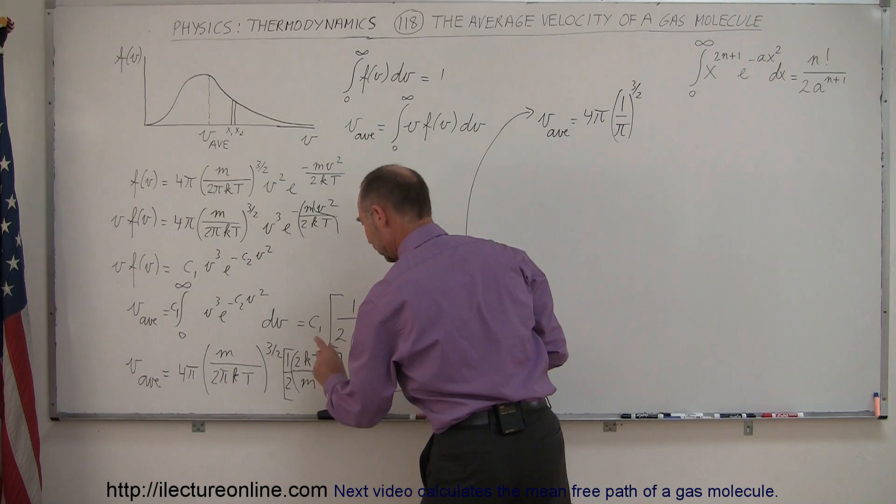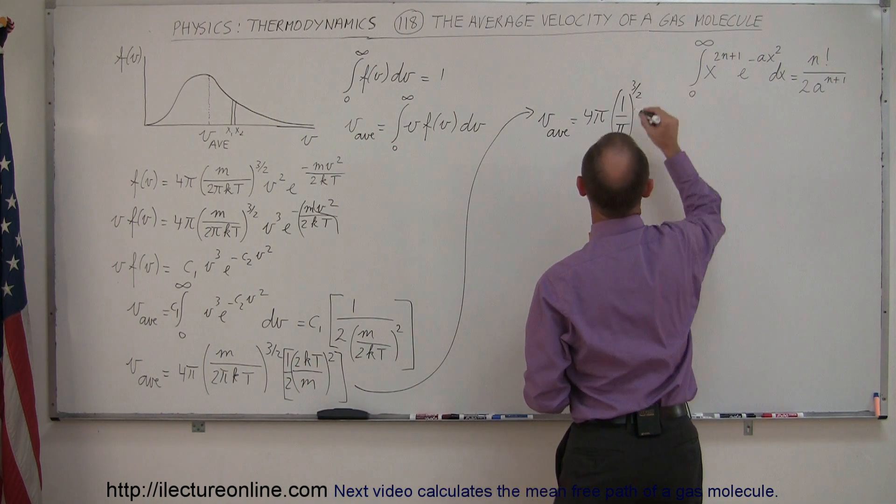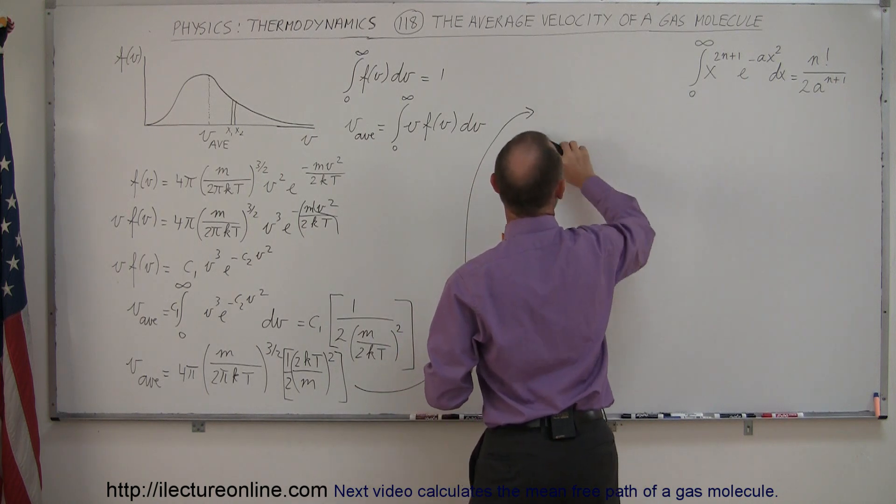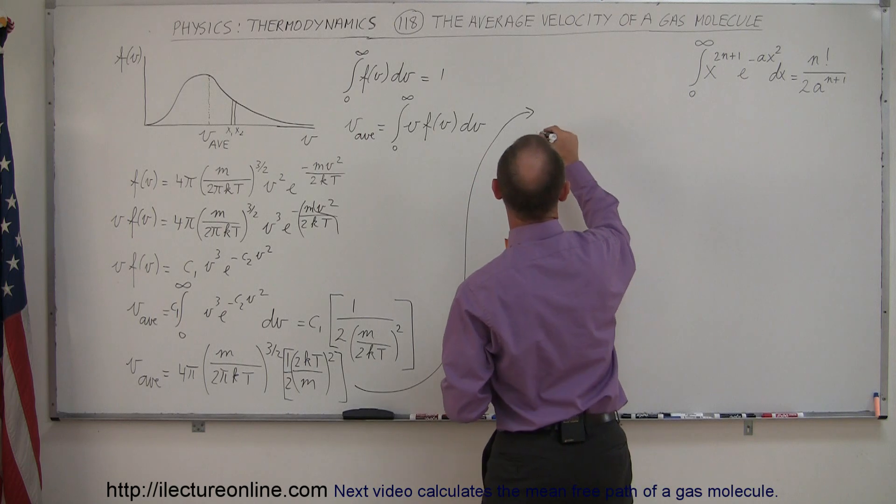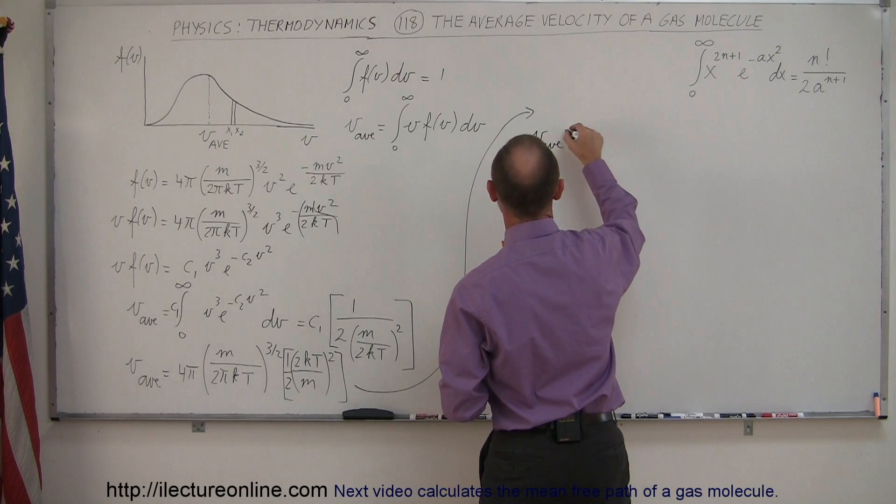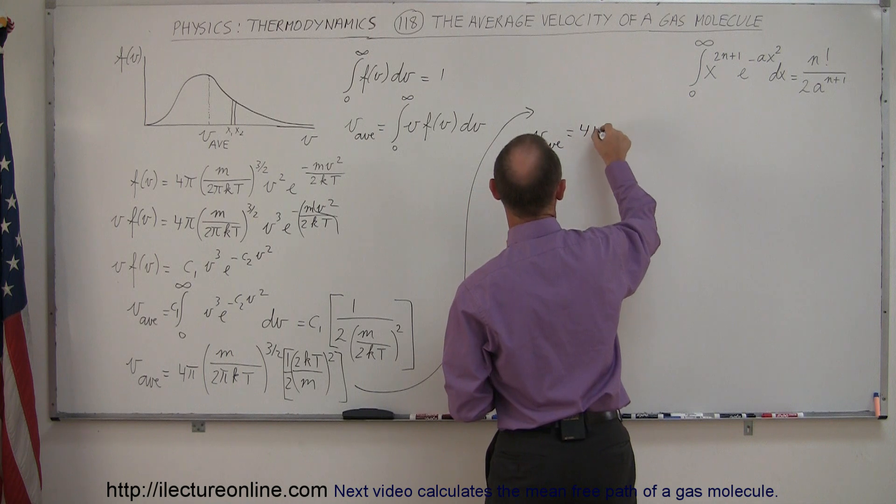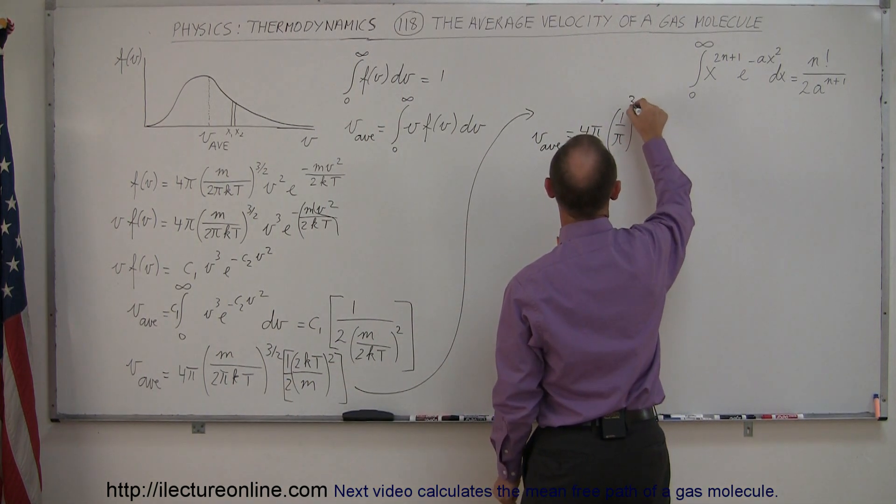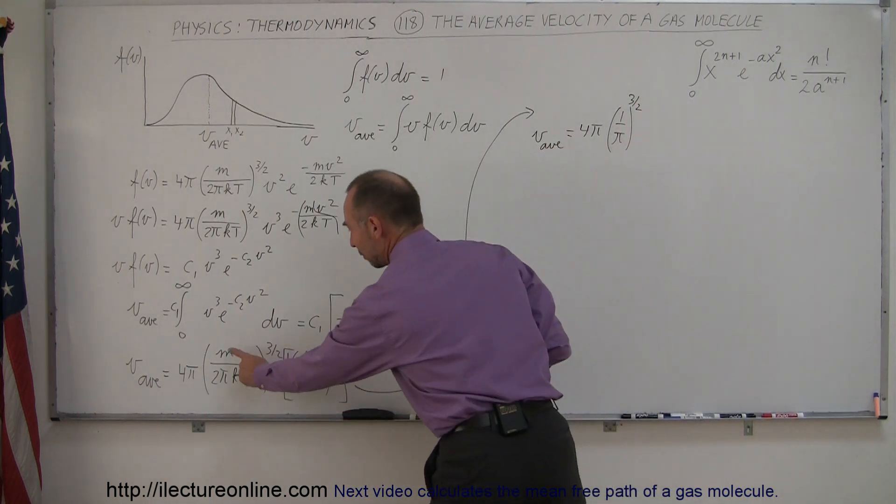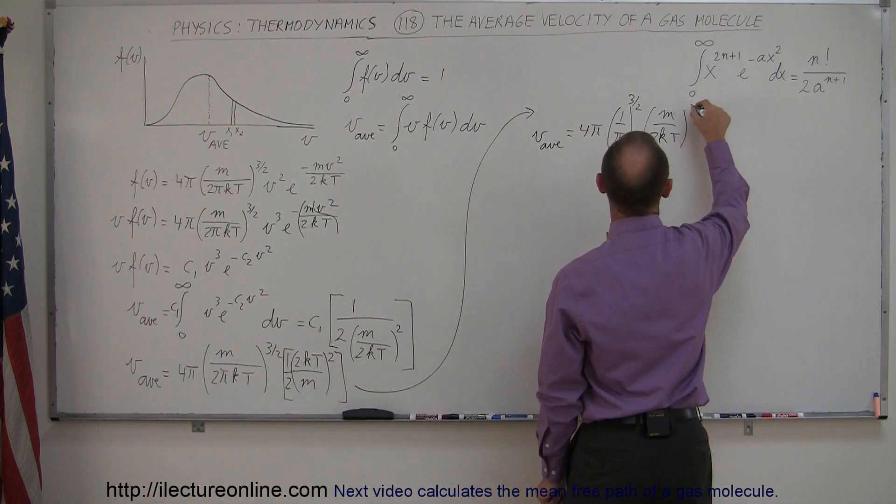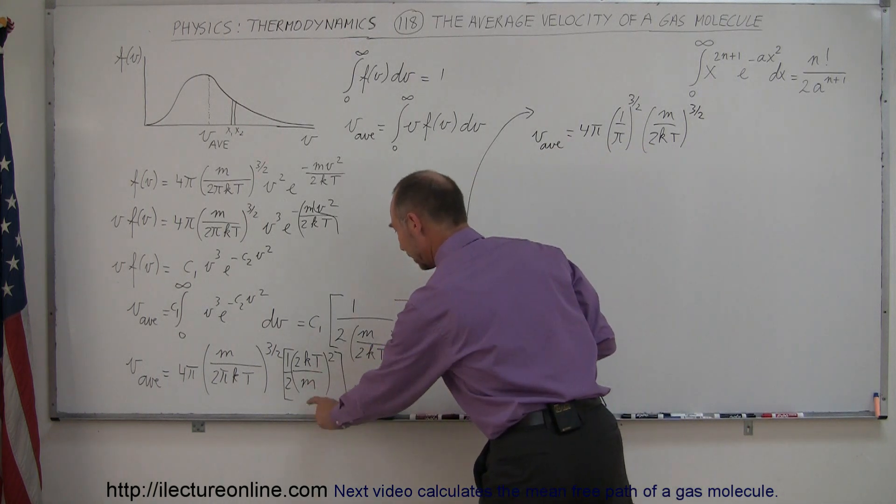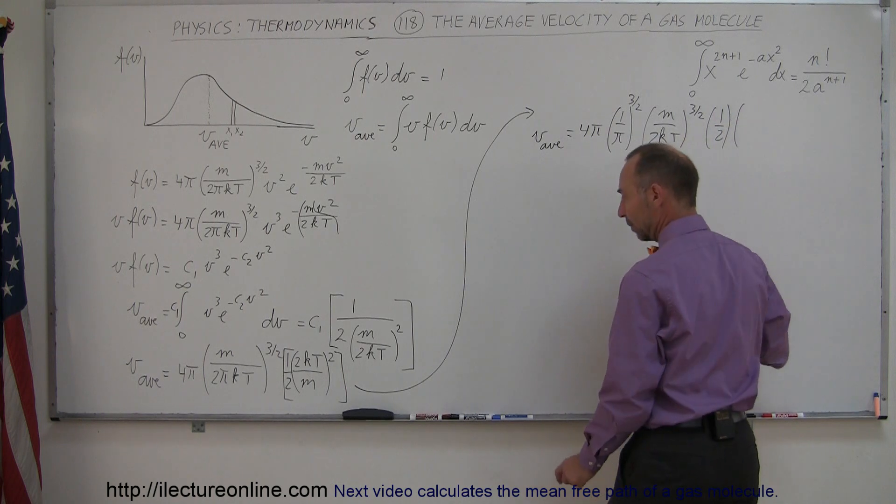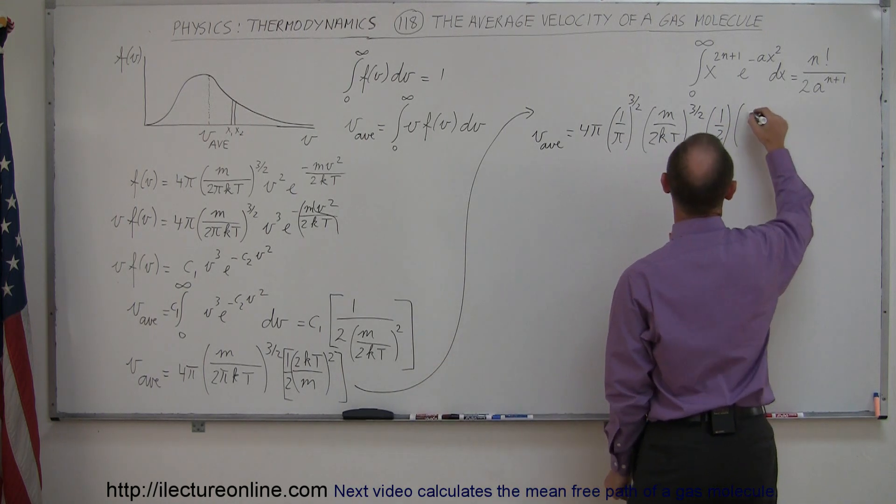So I took my 1 over π out, so I'm left with an M over 2KT here, and I have a 2KT over M there, so that makes a perfect match. And I think I started a little bit too high, let me try this again. Let me lower my equations, I don't want to run into that right there. So we have V average is equal to 4π times 1 over π to the 3 halves, and then I have M over 2KT to the 3 halves, and I'm multiplying that times 1 half times 2KT over M to the second power.